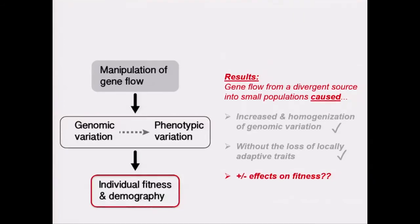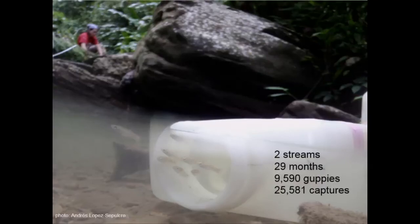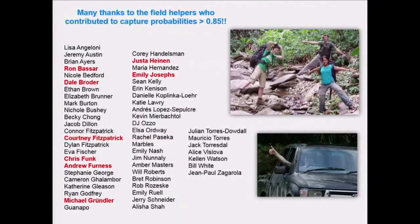The most exciting question is how does gene flow affect individual fitness and demography? To test this, I conducted a large-scale mark-recapture and genetic monitoring study, censusing the Taylor and Kaiwal focal sites for 29 consecutive months, three of which were before the onset of gene flow, monitoring close to 10,000 individual guppies. This would have been entirely impossible without incredible field assistance, and many of these people are outstanding evolutionary biologists — some of whom are at this very meeting doing inspiring work.